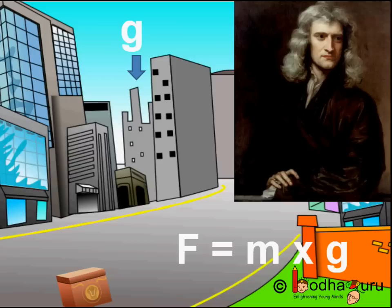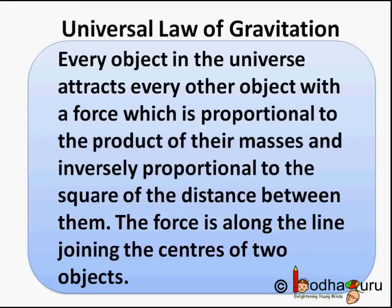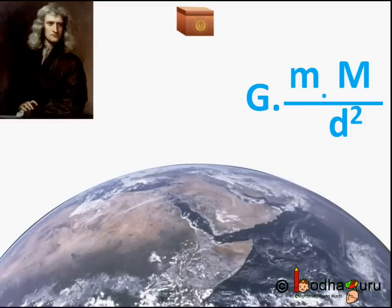The earth is pulling the object. Here, capital M is the mass of earth and small m is the mass of the object. Newton's law of gravitation can give the measurement of that force too. The law of gravitation states that every object in the universe attracts every other object with a force which is proportional to the product of their masses and inversely proportional to the square of the distance between them. The force is along the line joining the centers of the two objects. So, F is equal to capital G multiplied by m multiplied by capital M divided by d square.